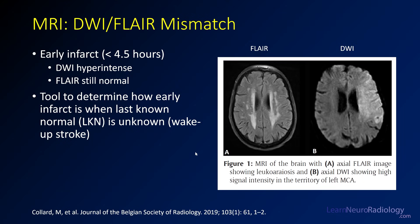This brings up the concept of diffusion-FLAIR mismatch. If you have an area that is bright on diffusion but still normal on FLAIR — as in this example showing the left MCA territory — that means you're probably in the early infarct window, less than four to six hours, before FLAIR abnormality or significant edema has developed. This is a tool to determine if tissue is likely to return. Once FLAIR is positive, it's not likely to recover. This mismatch can be used in wake-up strokes where patients have an unknown last-known-normal time, indicating that aggressive intervention is likely to be helpful.